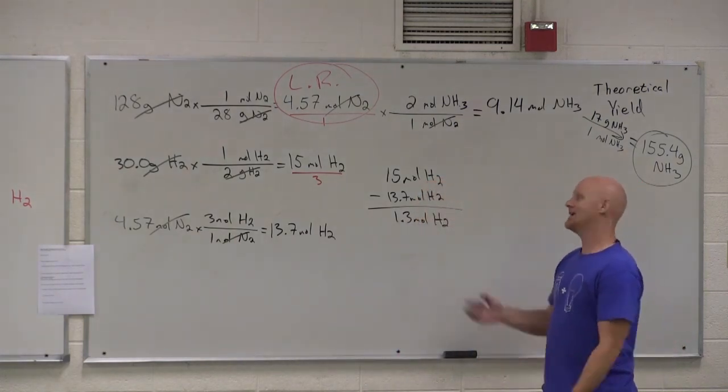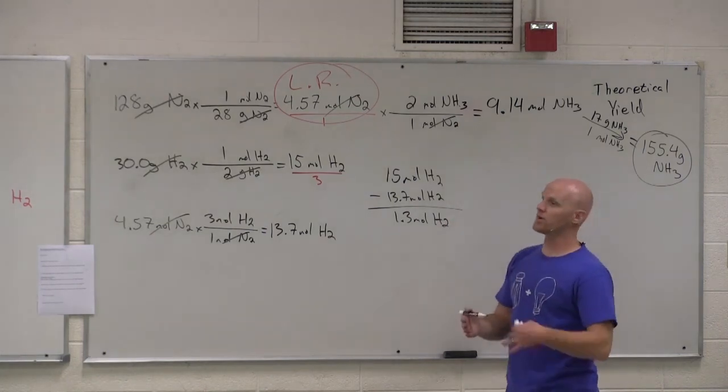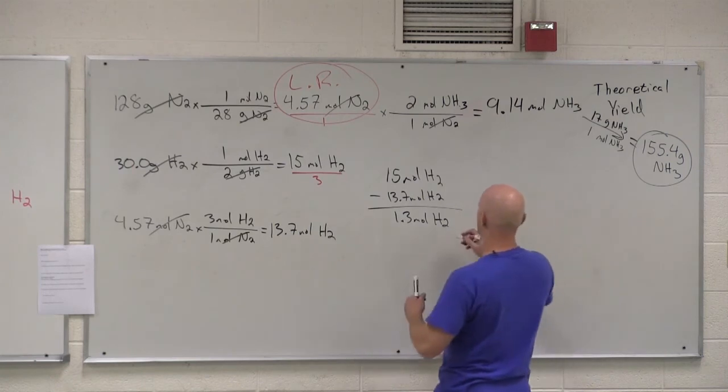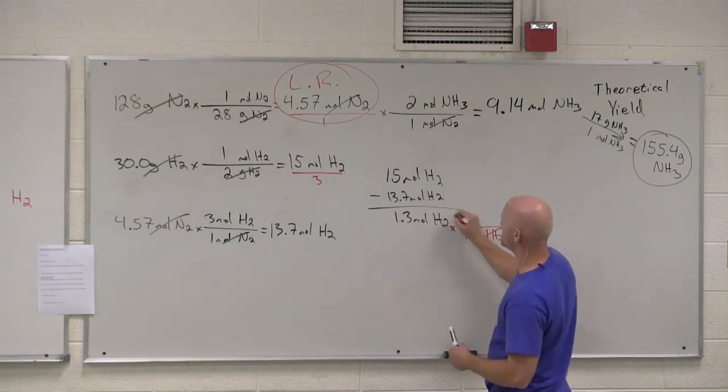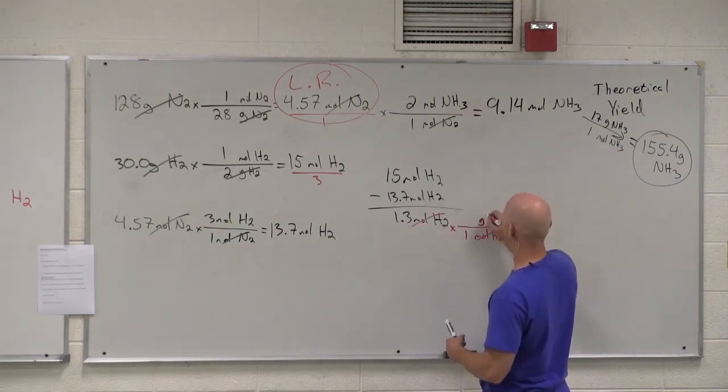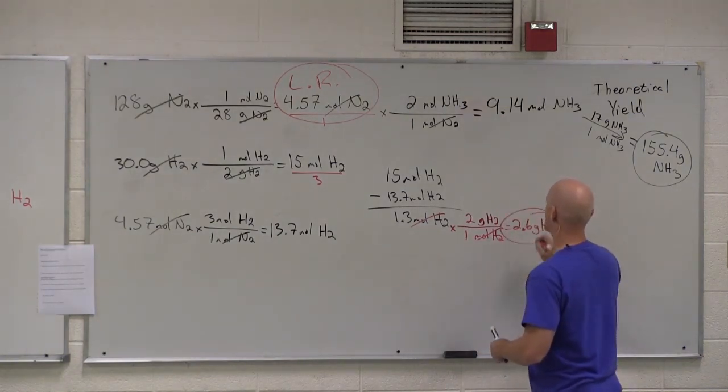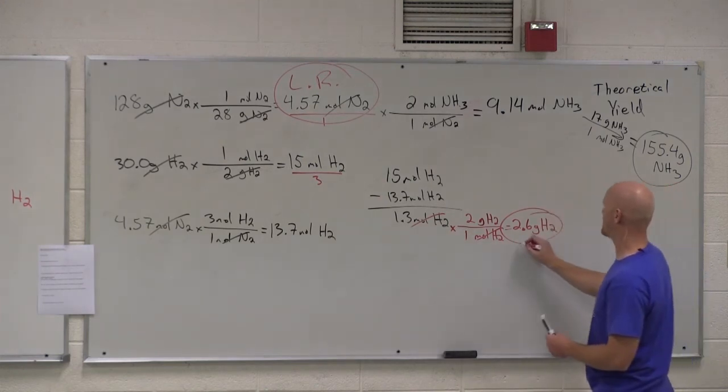But again, the question is that how much is left in excess? That could be a question asking for the number of moles. It also could be a question asking for the number of grams. So, if we wanted to convert this to grams, connection between moles and grams is always the molar mass. And the mass of one mole of H2 is 2 grams. And so, in this case, that would be 2.6 grams of H2 in excess.